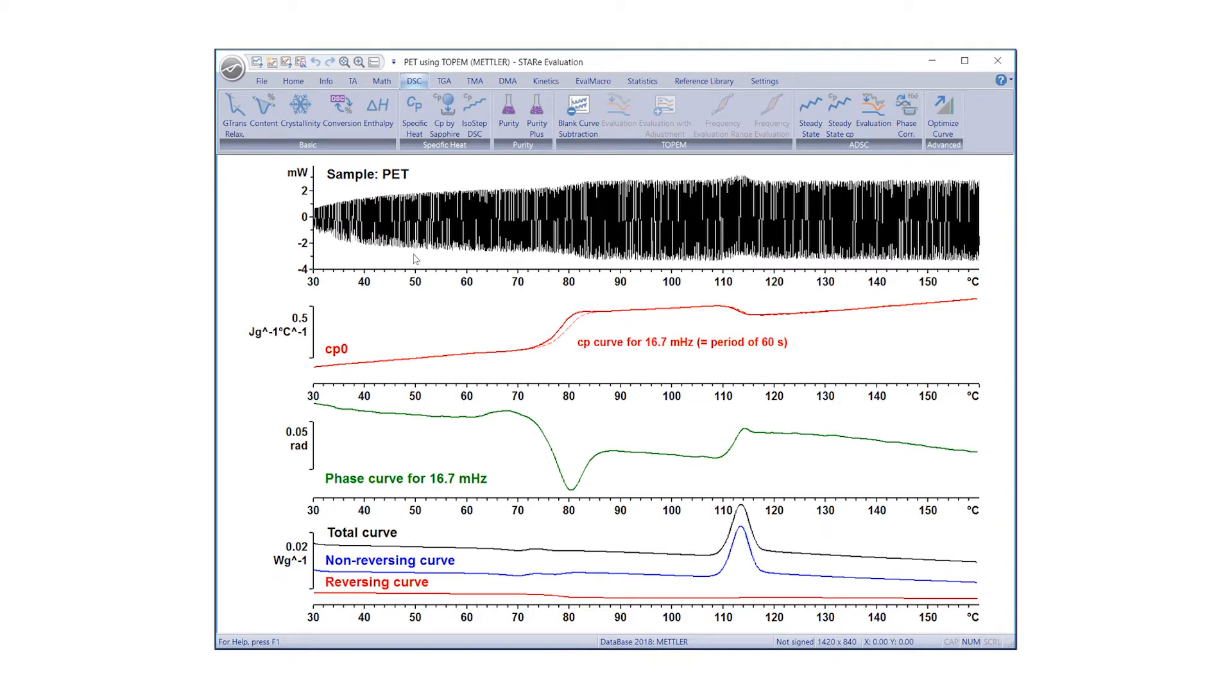The uppermost curve is the measured heat flow. The curve below this is the quasi-static specific heat capacity. The curve exhibits a step-like increase at the glass transition at about 77 degrees.